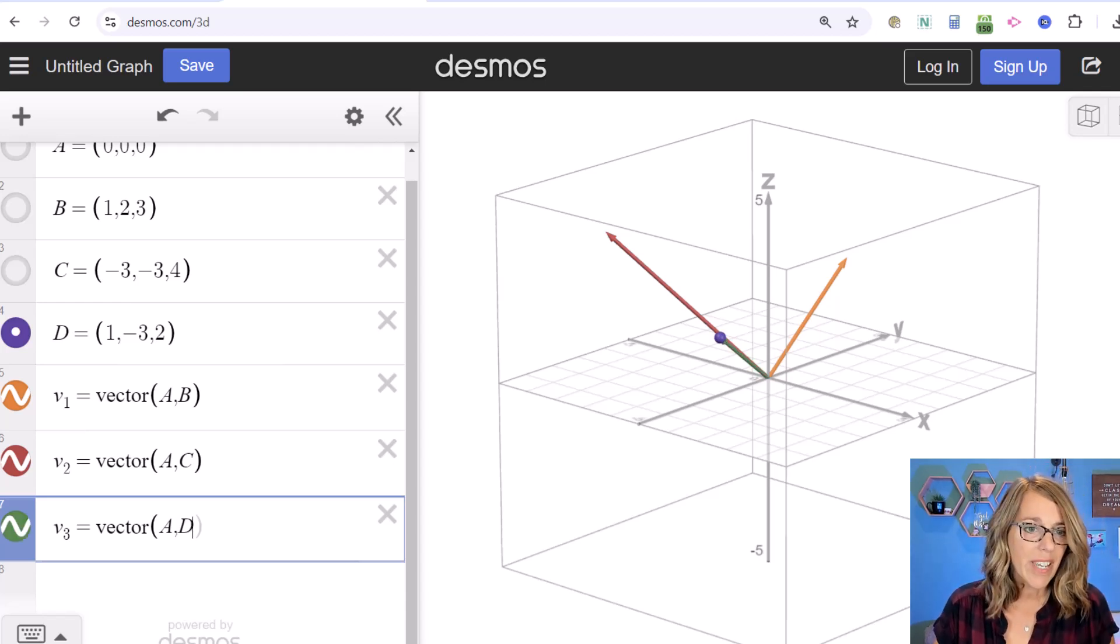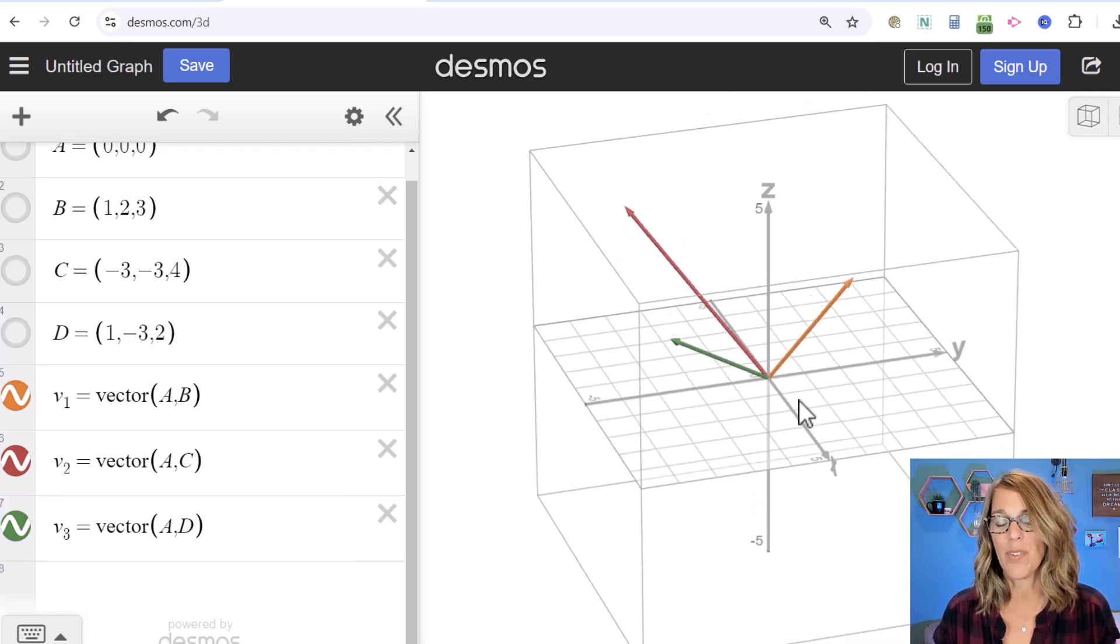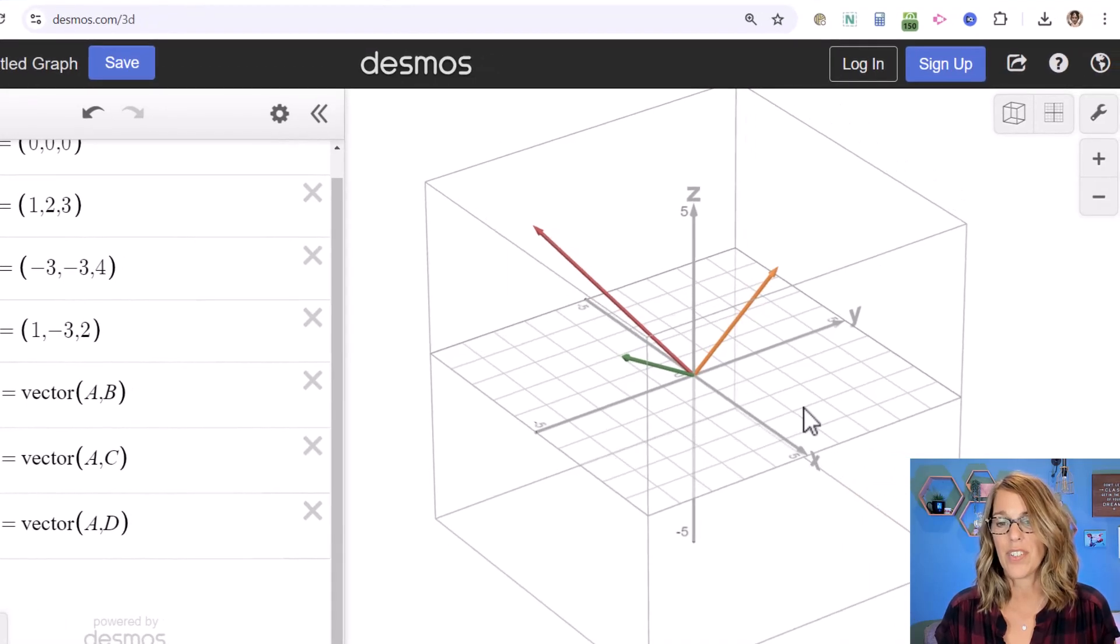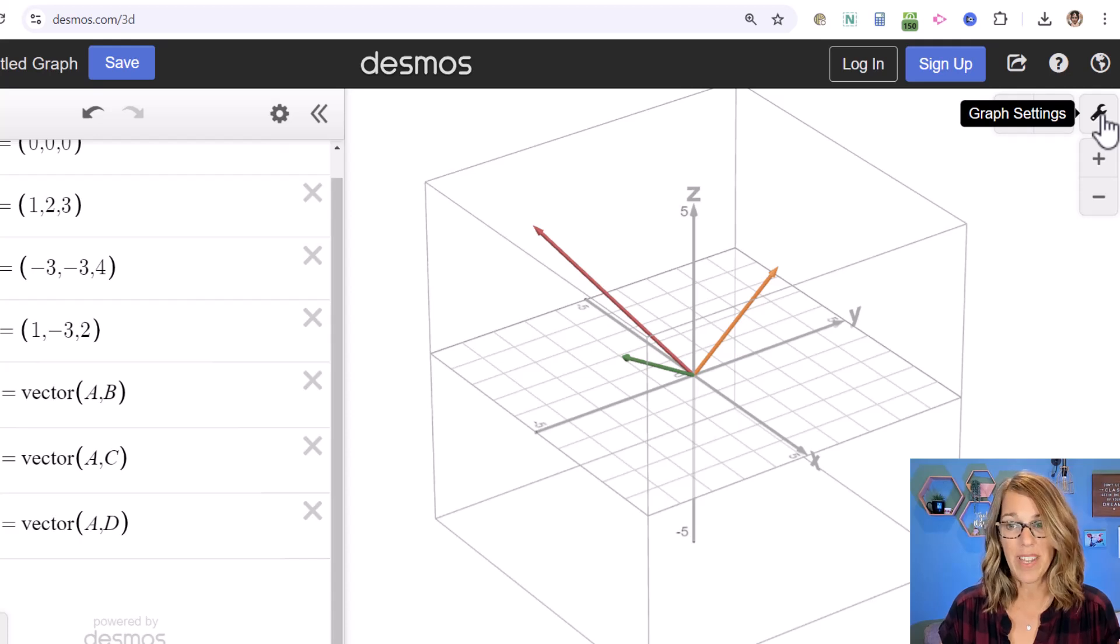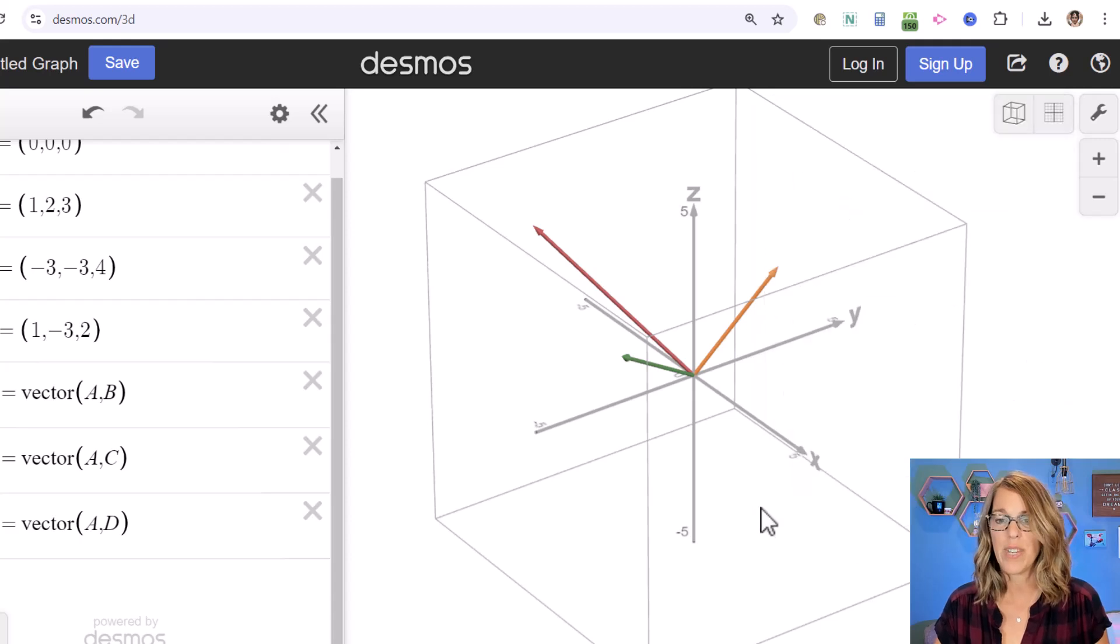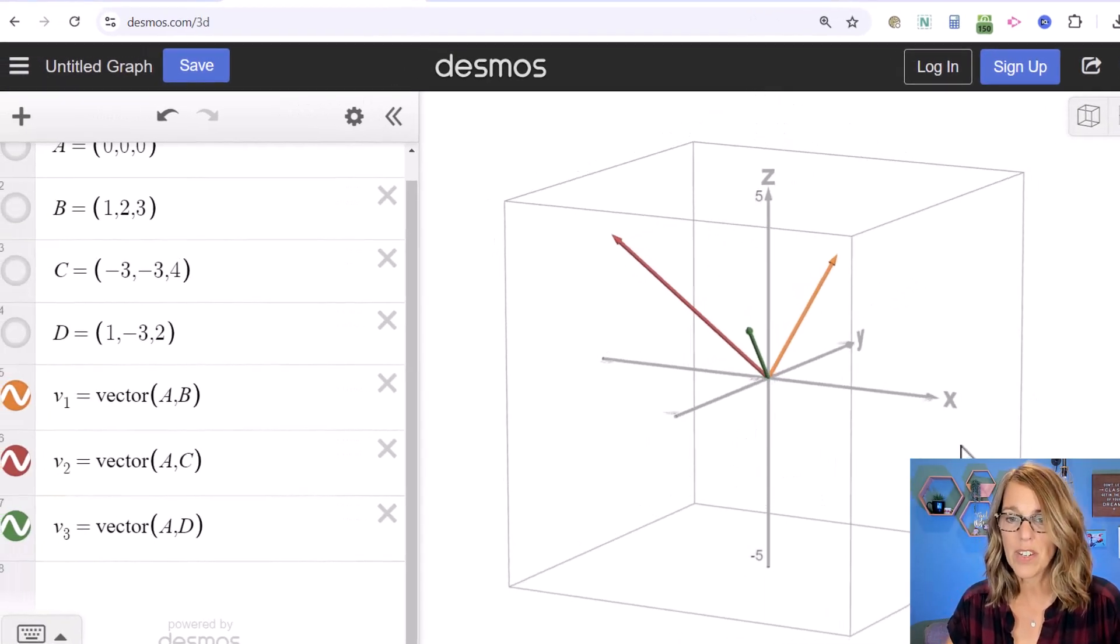It looks like vectors 2 and 3 are right on top of each other, but they aren't. If I click and hold on the 3D coordinate system and drag, I can see they're actually three separate vectors. I'll adjust my viewing screen by clicking on the wrench and removing the xy-plane so we can see those vectors better.